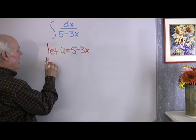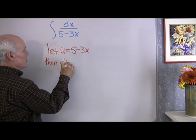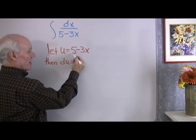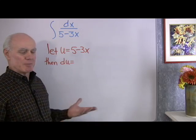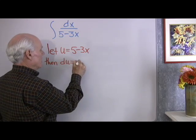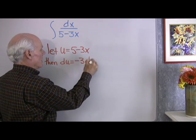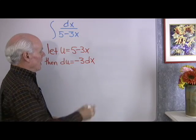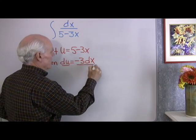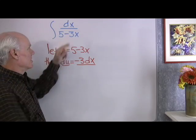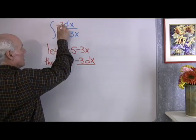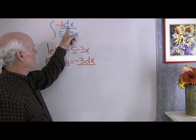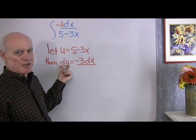Then, if I do that, du must be equal to, well, I differentiate this with respect to x, I'm just going to end up with negative 3. So negative 3 times dx. Alright, so du is negative 3 dx. Well, notice up here I have the dx. Let's just put the negative 3 in front. Now I have negative 3 dx. That's going to be exactly du.